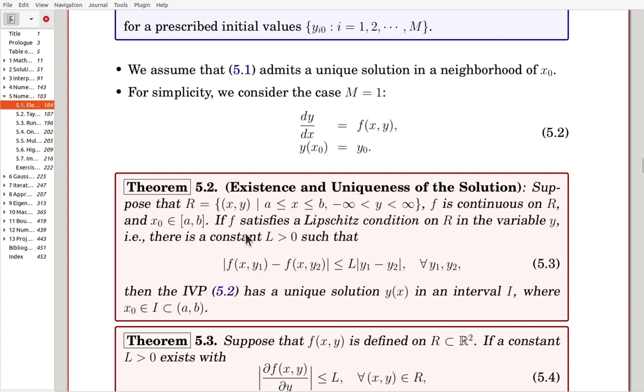And also, we assume f satisfies a Lipschitz condition in the variable y. That means there is a constant L, positive, such that for arbitrary choice of y1 and y2, the distance, the function value distance, is bounded by L times |y1 minus y2|.